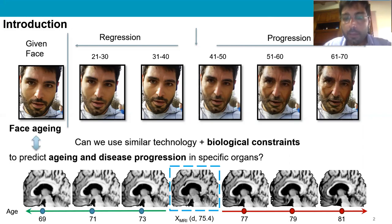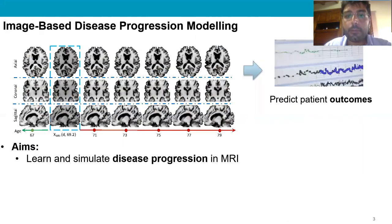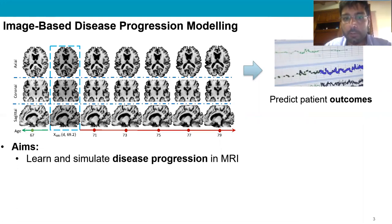In our specific case, we are interested in learning and simulating images that describe neurodegeneration in the brain. Such a system can be particularly useful to predict patient outcomes and therefore improve patient treatments. Differently from other standard models that only predict a disease level associated with the patient, the network we are proposing generates an entire MRI sequence and simulates the course of the disease for a specific subject starting from a specific time point.